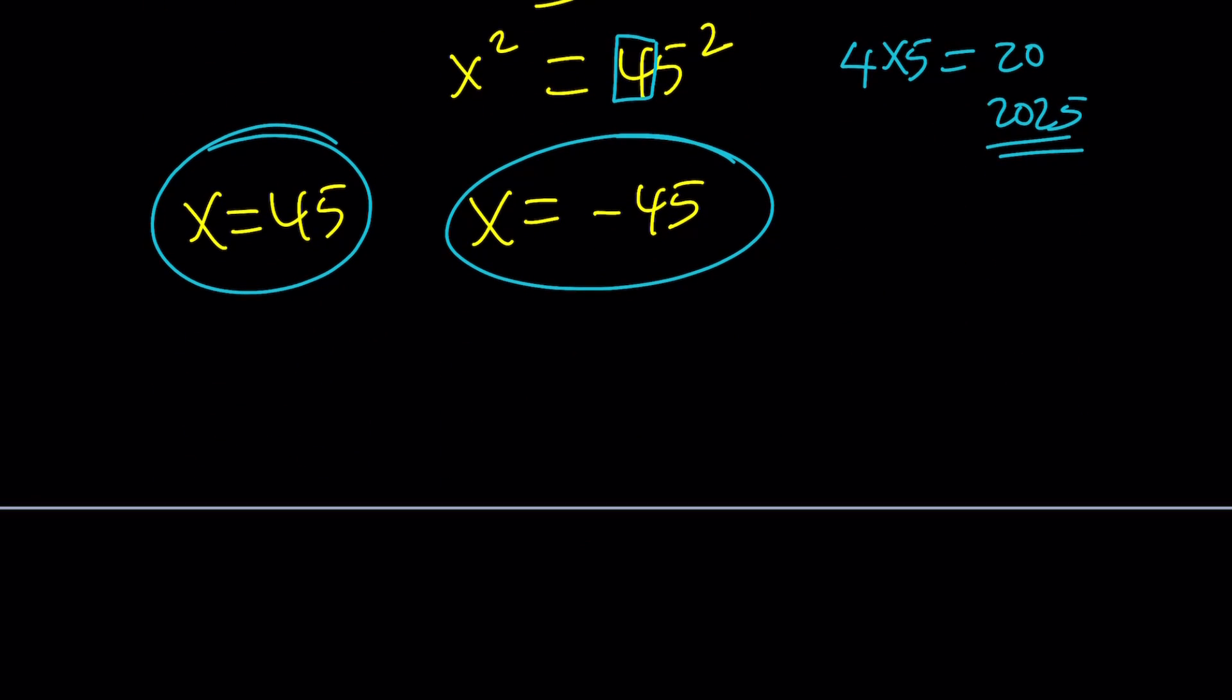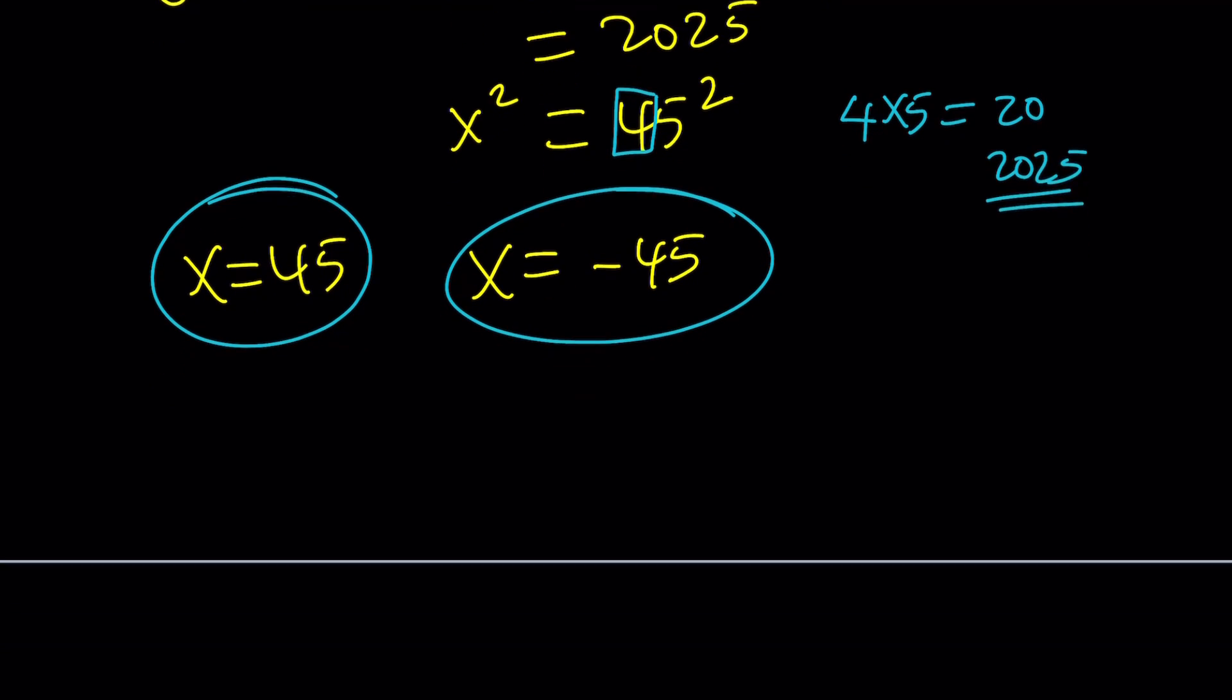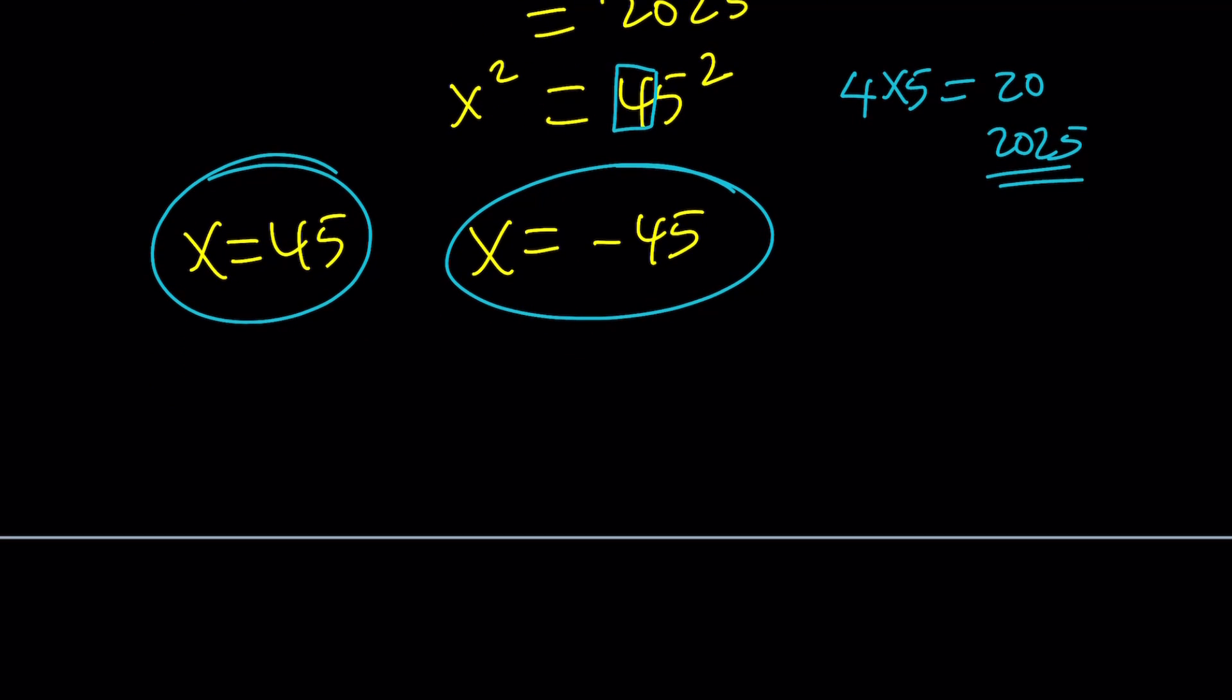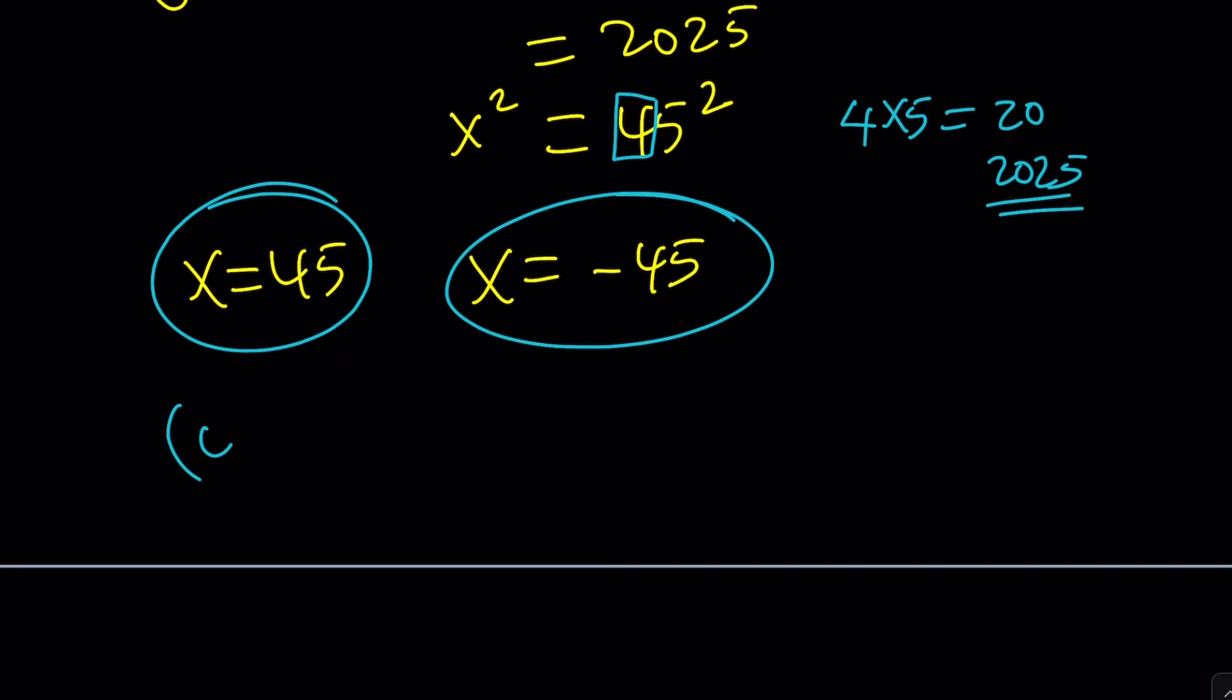Do the other ones give us a solution? You can go ahead and test it out. But guess what? They're not going to give you any solution. So x = 45, x = -45 are going to be the only solutions with y = 4. We can write it as ordered pairs: (45, 4) and (-45, 4).